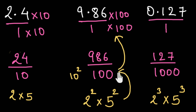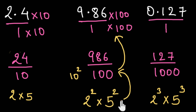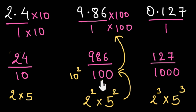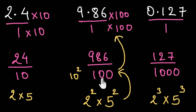Now, you might ask: what about unequal numbers of 2s and 5s in the denominator, or maybe having some other factor other than 2s and 5s? Would the rational number still be terminating? Well, as we just saw, the key idea is to get a 10 or a power of 10 in the denominator. If we can do that, we can say its decimal form would be terminating. If not, it would be non-terminating and recurring.